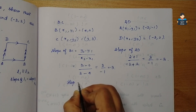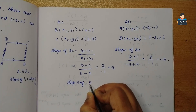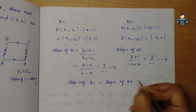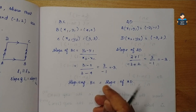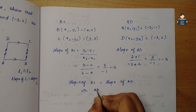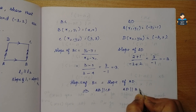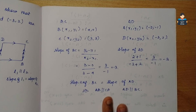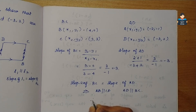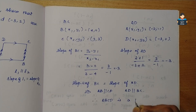Slope of BC is equal to slope of AD. Since slopes are equal, this implies AB parallel to CD and AD parallel to BC. So opposite sides are parallel, therefore ABCD is a parallelogram.